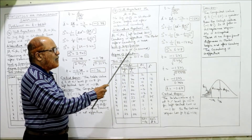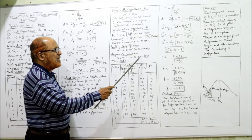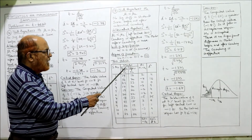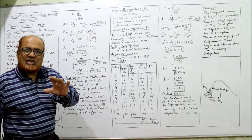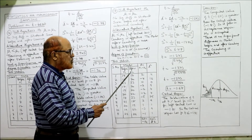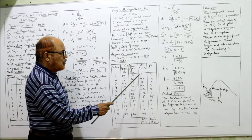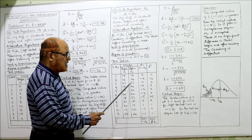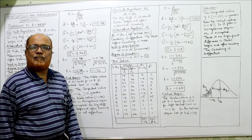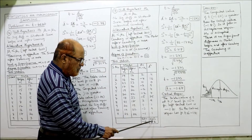Level of significance α = 0.05 (assumed). Degree of freedom = n − 1 = 11 − 1 = 10. We construct the table with columns: serial number 1 to 11, marks before coaching (x₁), marks after coaching (x₂), d = x₁ − x₂, and d². Differences: 19 − 17 = 2, 16 − 20 = −4, 23 − 23 = 0. Summation d = −14 and summation d² is calculated by squaring all differences.